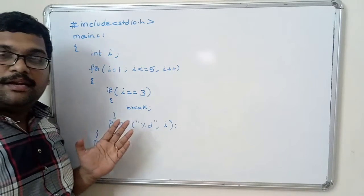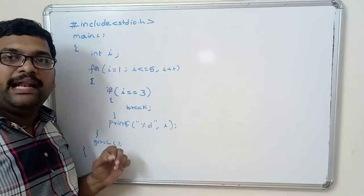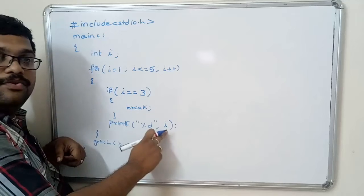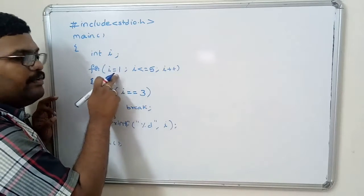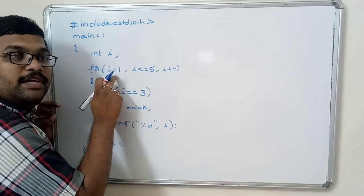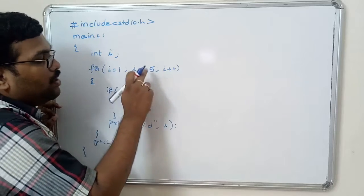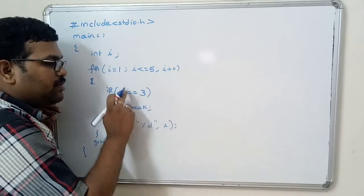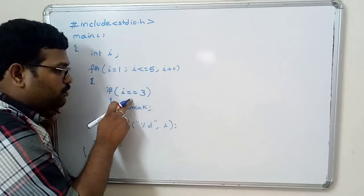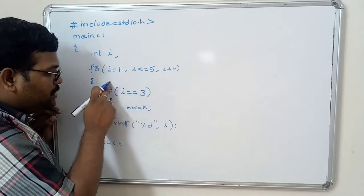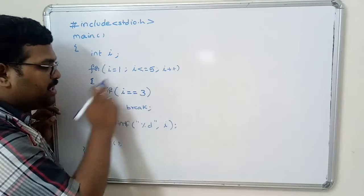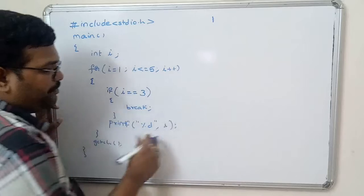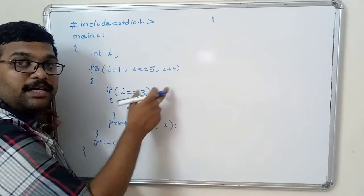This is a program to print N natural numbers. Here, first we are printing the i value. Initially the i value will be 1 because we have initialized it in the for loop — i less than or equal to 5, i plus plus. So first the condition will be checked: 1 is equal to equal to 3 — that is false, so this if block will be skipped and directly print i. So 1 will be printed. Now as i plus plus has been done, i will be 2. 2 less than or equal to 5 — again enter into the for loop because the condition is true.